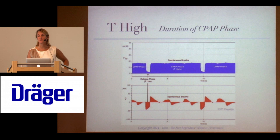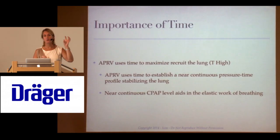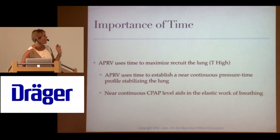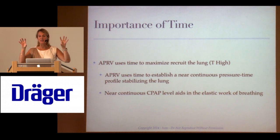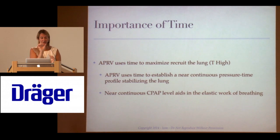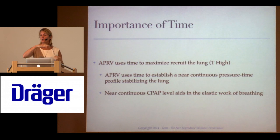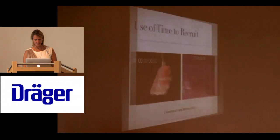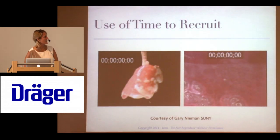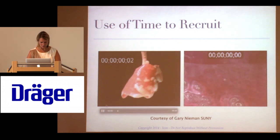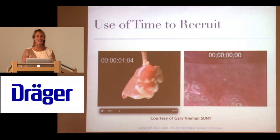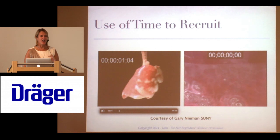Time high is the duration of the CPAP phase — how long are we going to hold that P high? On the CPAP phase, APRV uses time to recruit and to maintain alveolar stability. On the release phase, a minimal amount of time prevents derecruitment. The near-continuous CPAP phase aids in the elastic work of breathing, so patients can breathe much easier. In conventional ventilation, a one-second inspiratory time shows very little recruitment during that brief window.